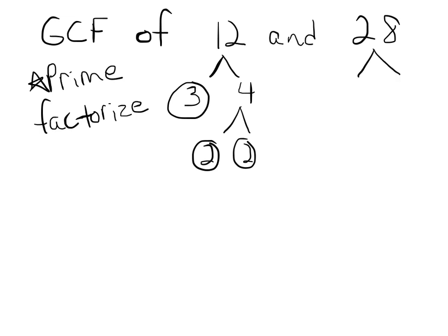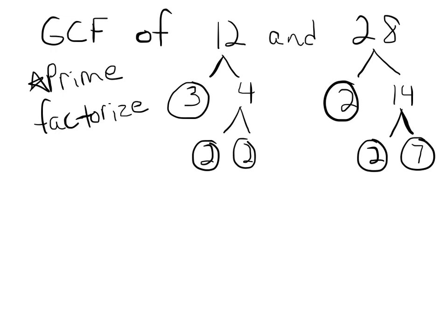Now let's do 28. I like to start with 2, so I'll do 2 and 14. 2 is prime, so circle it. 14 is not, so break it down: 2 and 7. Both 2 and 7 are prime — you can only multiply 1 and 7 to get to 7. Now that I have the prime factors of each, I'm going to list them out. The prime factors of 12 are 2 × 2 × 3, and the prime factors of 28 are 2 × 2 × 7.